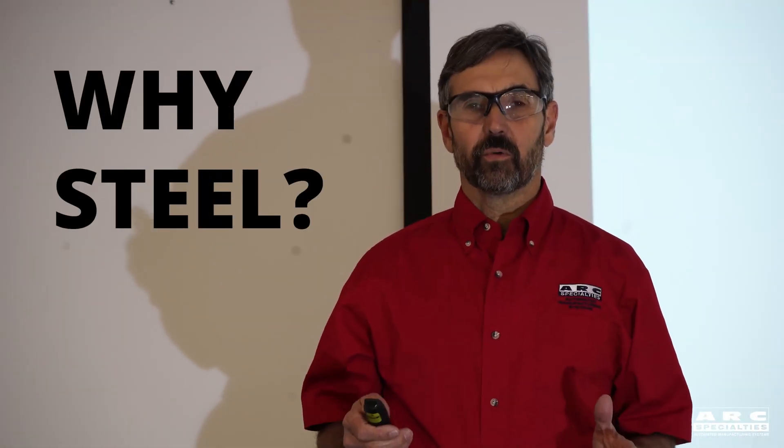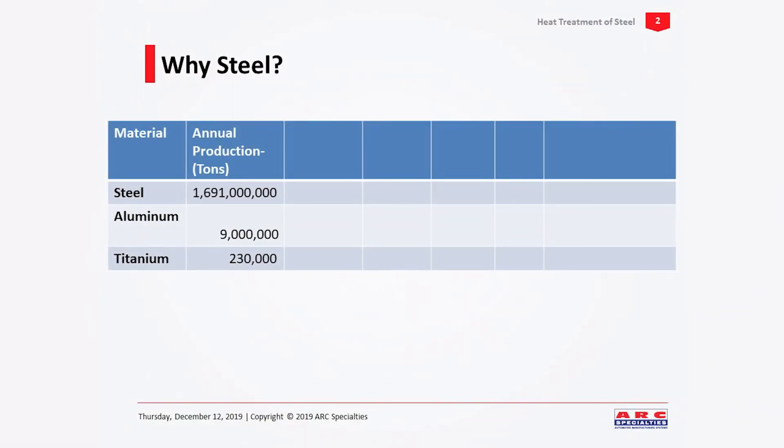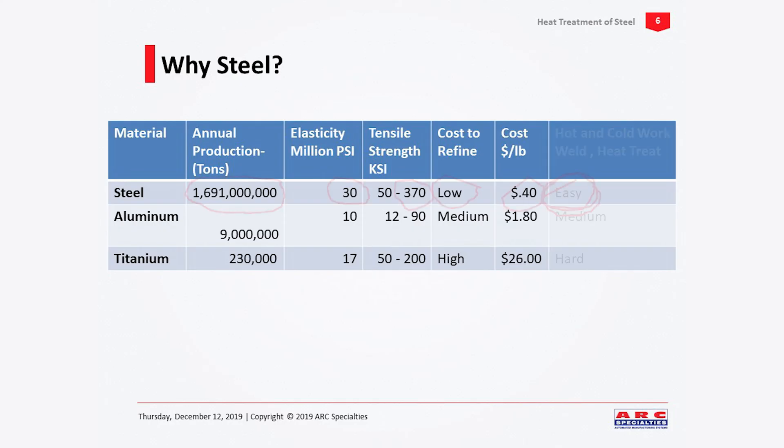So first question we need to know is why steel? Why is there so much steel used in production? The annual production of steel compared to the other two structural materials is much higher. One possible reason is the modulus of elasticity - steel is much more rigid than titanium or aluminum. Another explanation is tensile strength. With heat treatment, steel is the strongest of the standard structural materials. Another is cost to refine - it's very easy to convert iron ore into steel, much harder with aluminum and titanium. Finally, the cost per pound. Steel is around 40 cents a pound. That hasn't changed much in my career, and yet aluminum and titanium are much higher in cost. So if you put all these things together and combine how easy it is to weld, heat treat, and cut, this is why steel wins.